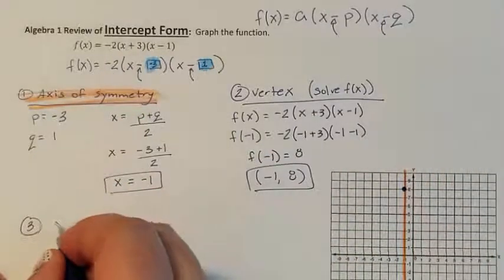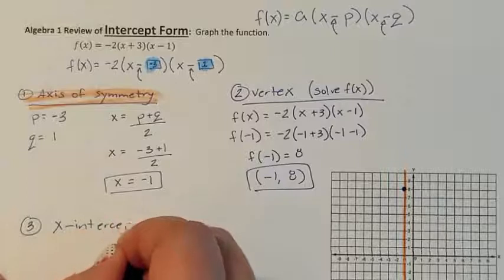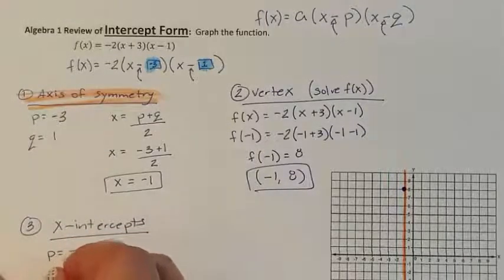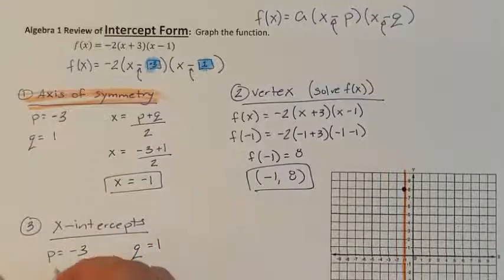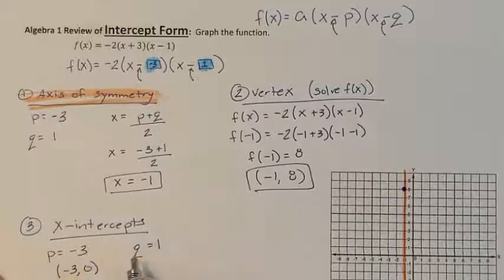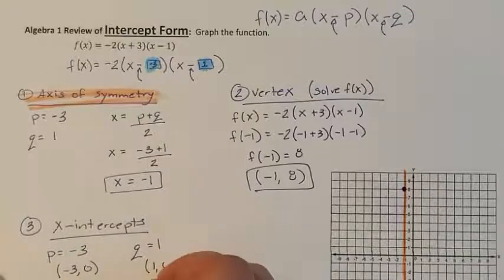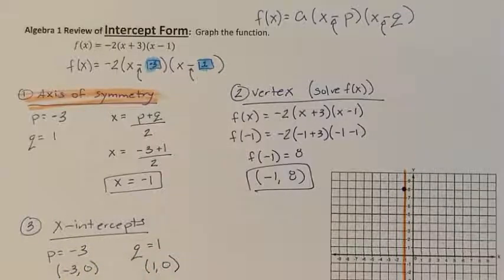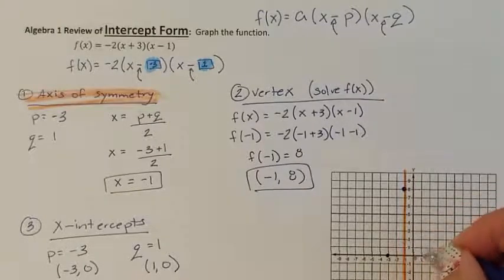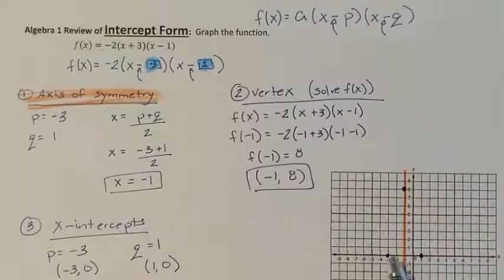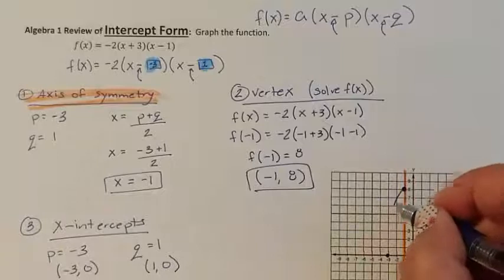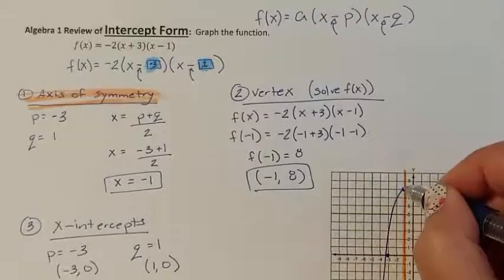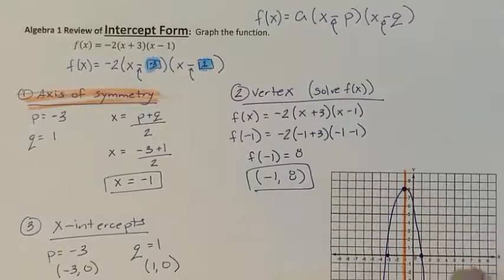In intercept form, you actually have x-intercepts. Your x-intercepts are your p and your q. My p x-intercept is the coordinate point negative 3, 0. My q x-intercept coordinate point is 1, 0. So I crossed right here at negative 3 and I crossed right here at 1. They are intercepts. Verify that they are the in-between point with the axis of symmetry. And then you have a curving line just connecting them. And you have now graphed it.